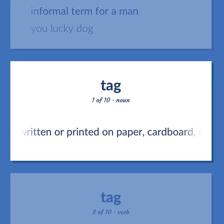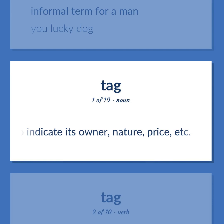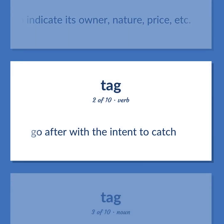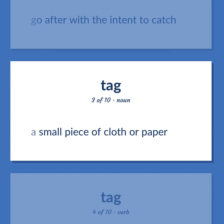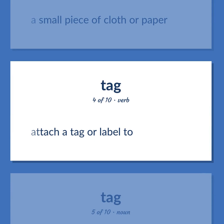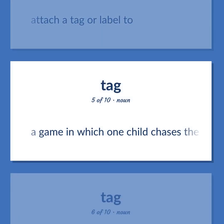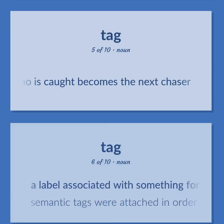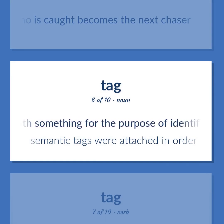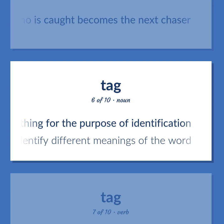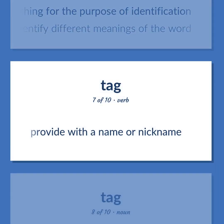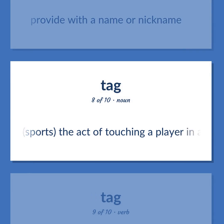A label written or printed on paper, cardboard, or plastic that is attached to something to indicate its owner, nature, price, etc. Go after with the intent to catch. A small piece of cloth or paper. Attach a tag or label to. A game in which one child chases the others; the one who is caught becomes the next chaser. A label associated with something for the purpose of identification. Semantic tags were attached in order to identify different meanings of the word. Provide with a name or nickname. Sports: the act of touching a player in a game, which changes their status in the game.